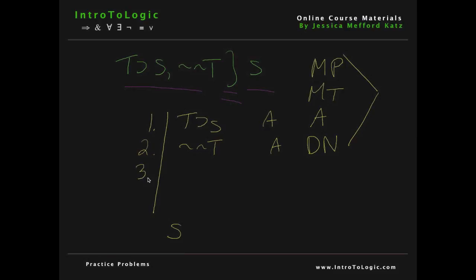The first thing that hopefully you notice is that we can drop two negations using the rule of double negation and derive t. You'll write 2 — the line that we used — and the rule that we used, which in this case is double negation. And now we can use t to derive s, and we do this with the rule modus ponens.